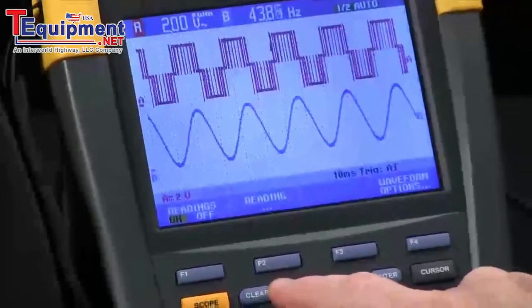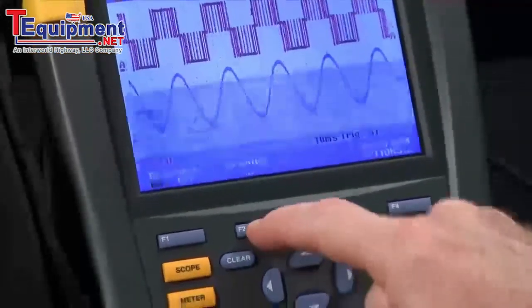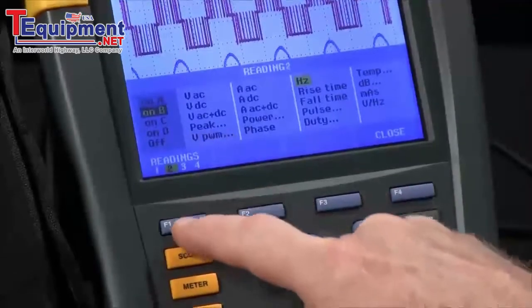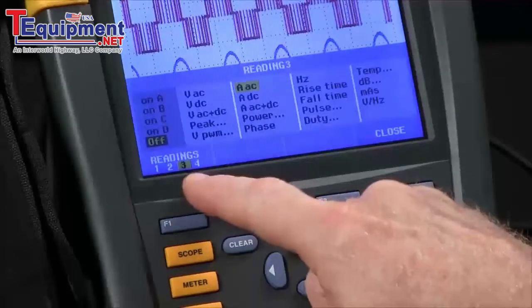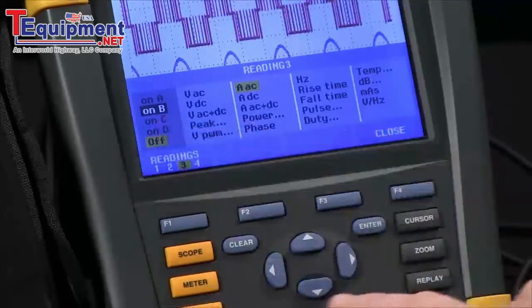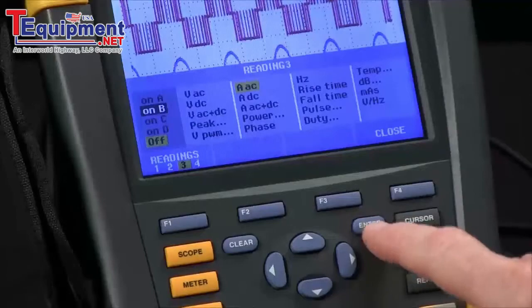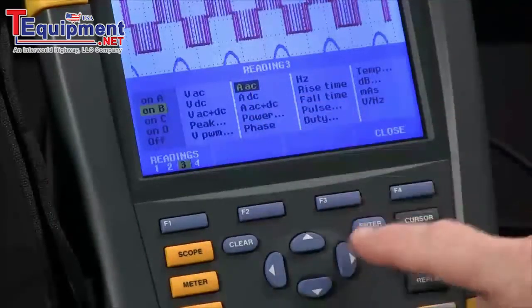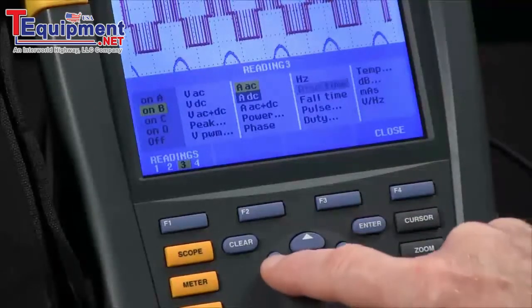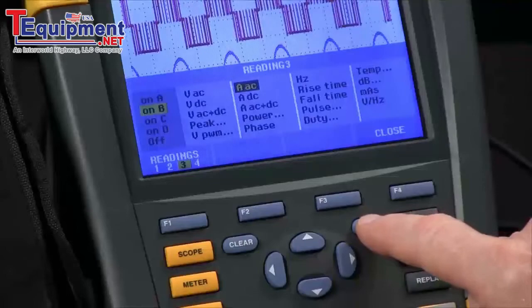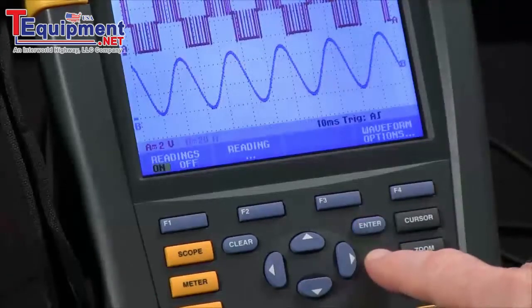We want to add a reading to that list. We'll hit the F2 button. We'll highlight the number three with F1. Right now it's off. We can arrow up, put it on channel B, hit the enter key, and then change that to read whatever we like. In this case we'll go with amps AC. We'll hit enter and now you can see three readings up here in the top of the screen.